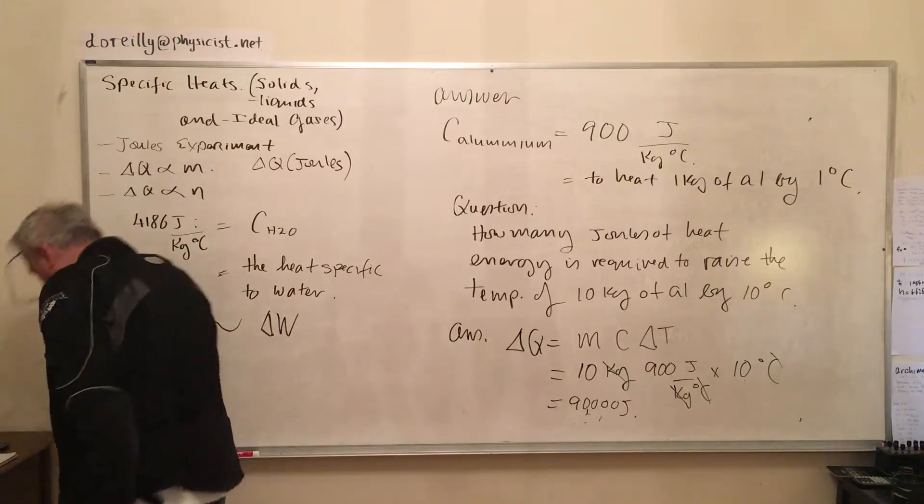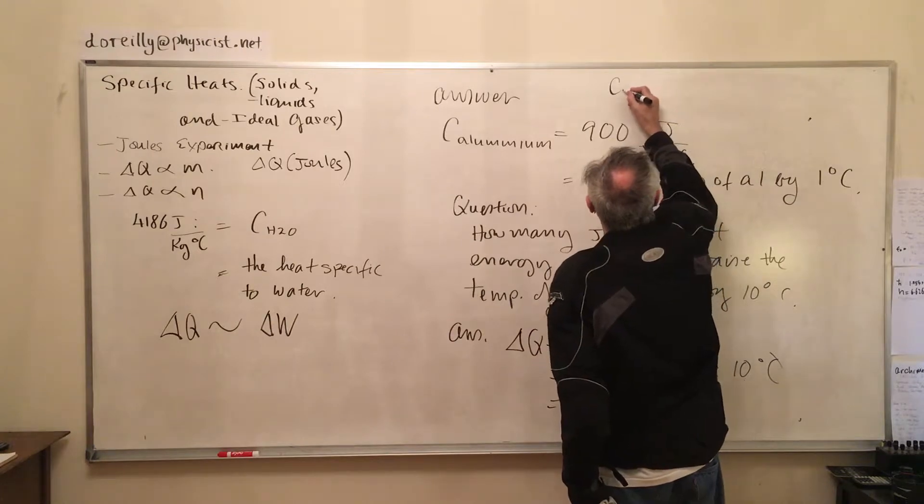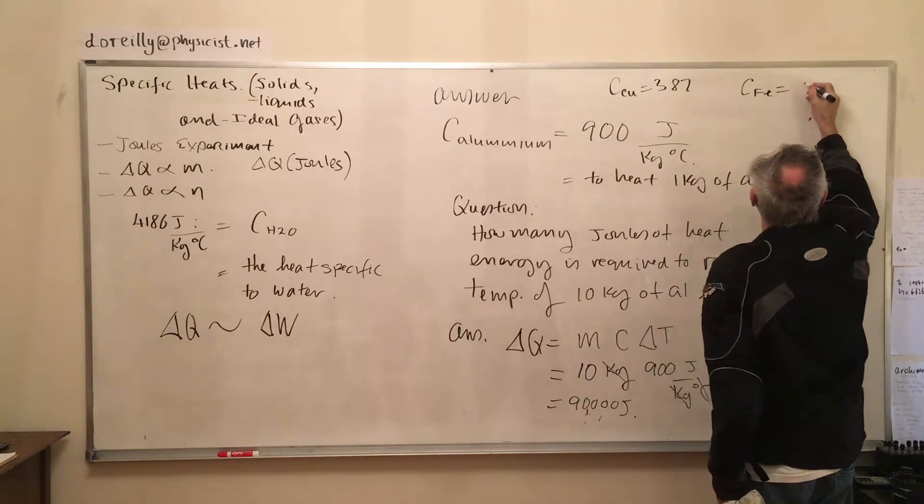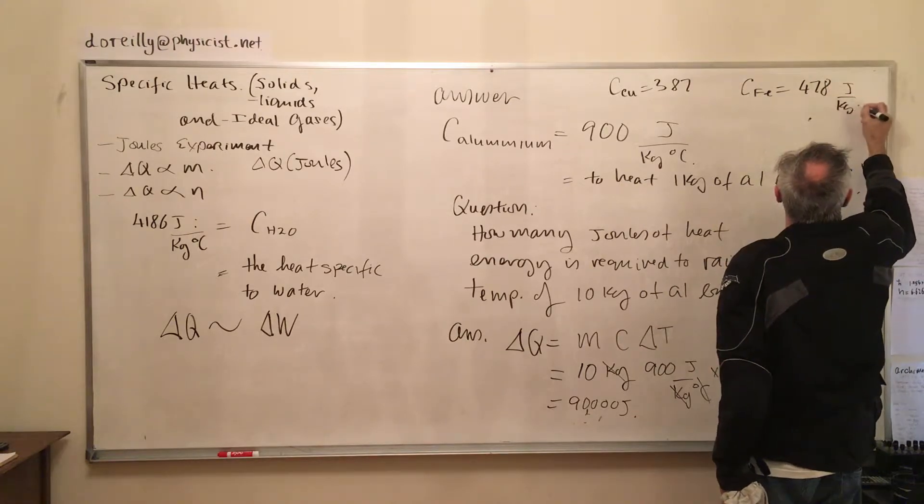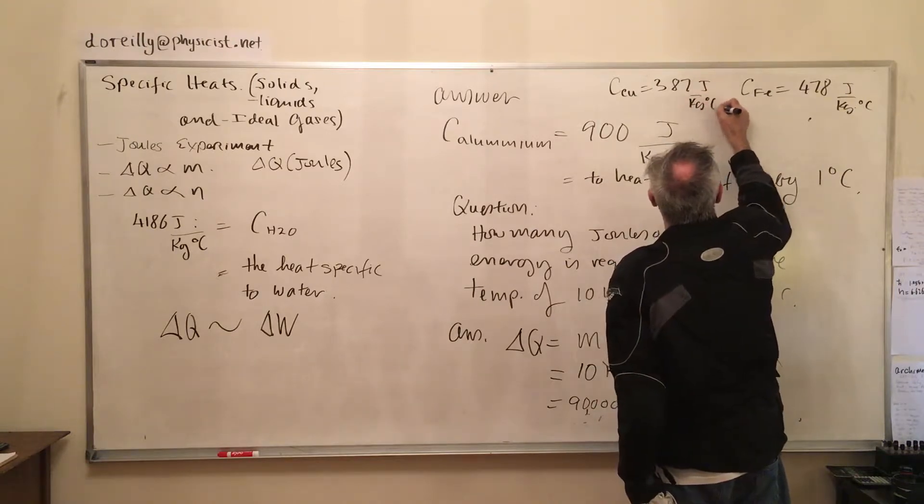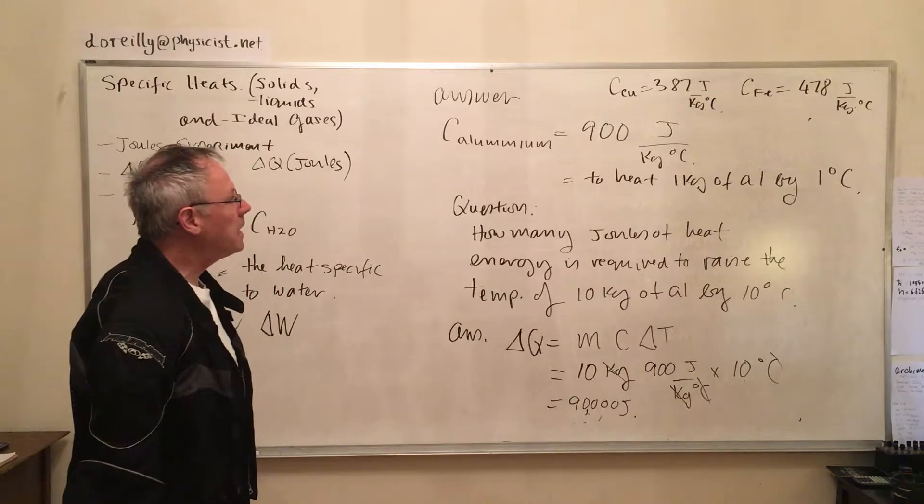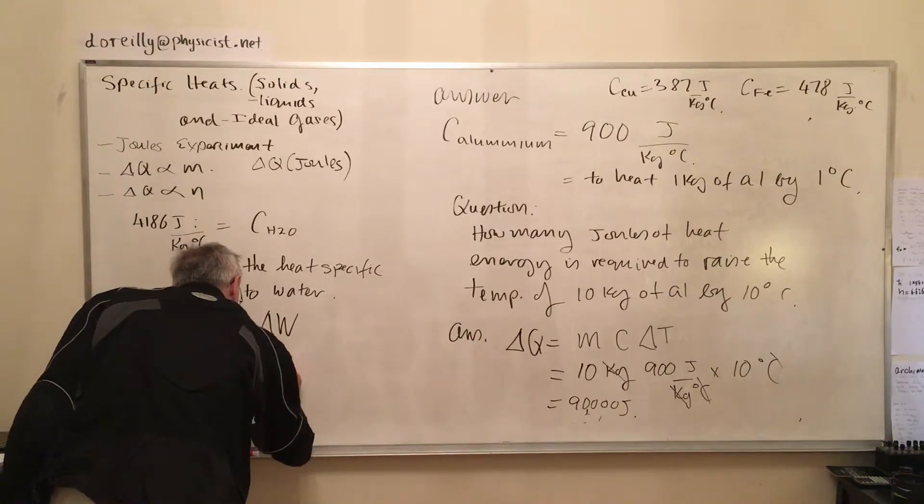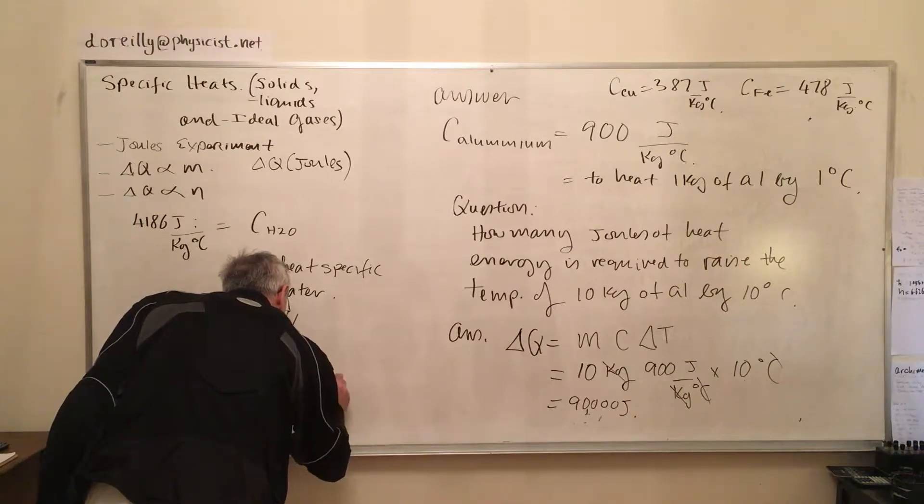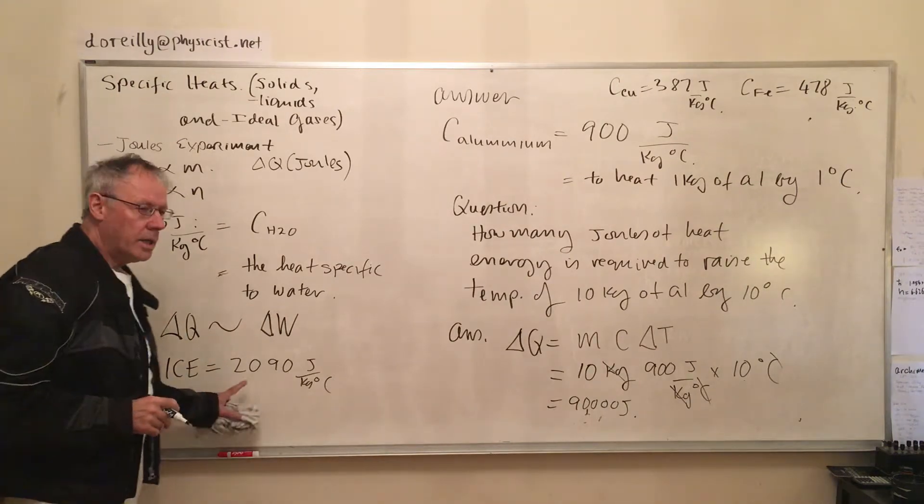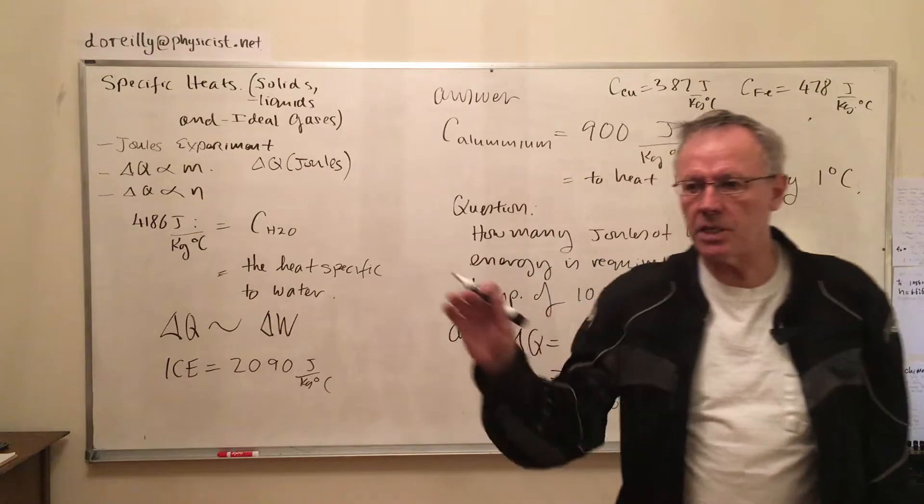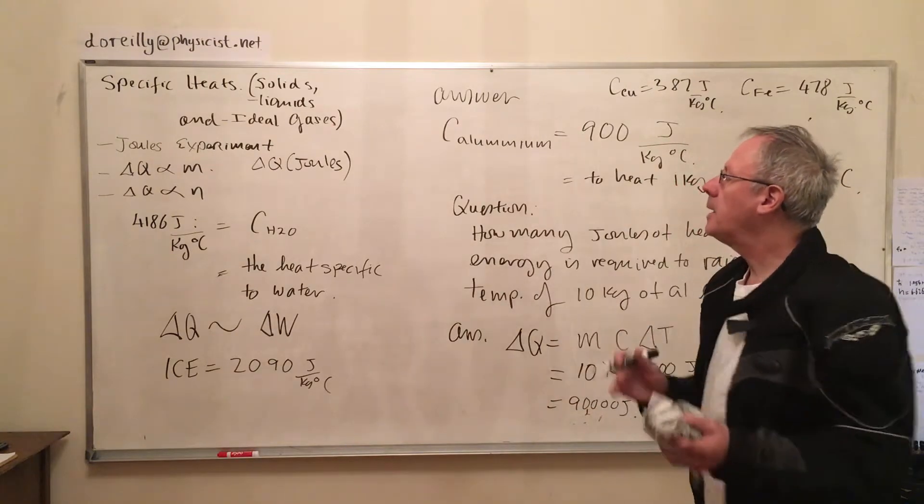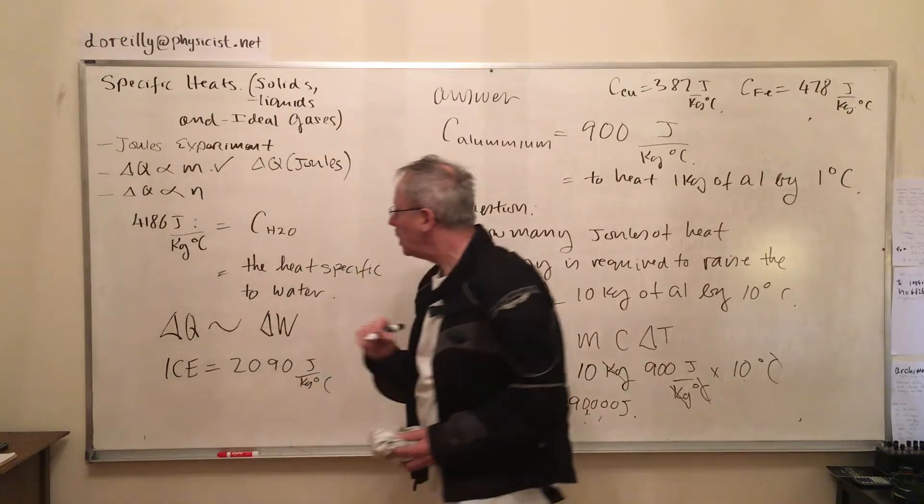Now for copper it's 387 joules as a specific heat, and iron is 478. For ice it requires a little over 2000 joules to raise the temperature of ice from 4 degrees below zero to 5 degrees below zero. Remember, once they go over zero, you're not ice anymore. So what we did was specific heat of solids and liquids. We didn't do gases.